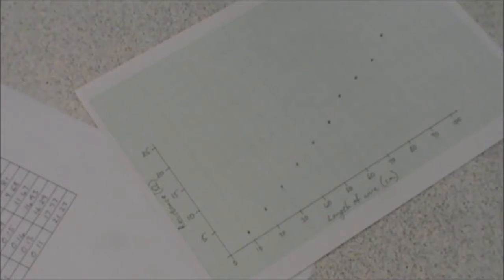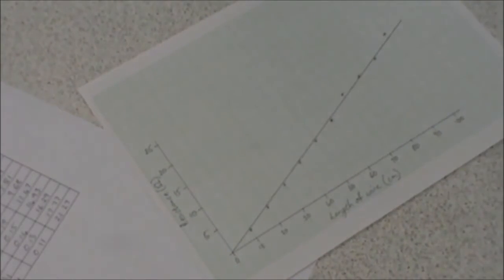Now we can add a line of best fit. If we look at this, it looks pretty much like a straight line. And there we have our completed graph.